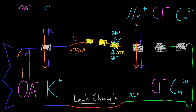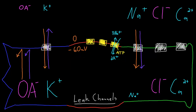Because some sodium is able to squeeze through the leak channels, bringing some positive charges into the neuron, that does affect the membrane potential a little. So instead of being at the potassium equilibrium potential of around negative 70 millivolts, at this imaginary step it might settle around negative 60 millivolts — which is actually a typical neuron resting potential. When the membrane is permeable to multiple ions with electrochemical driving forces, the resulting membrane potential is a weighted average of the equilibrium potentials of those ions, weighted by their permeability. At rest, the membrane is much more permeable to potassium than sodium, so the resting potential is much closer to the potassium equilibrium potential.